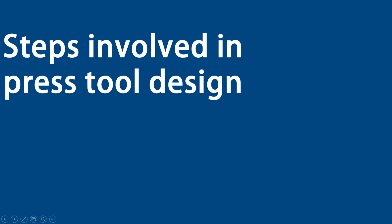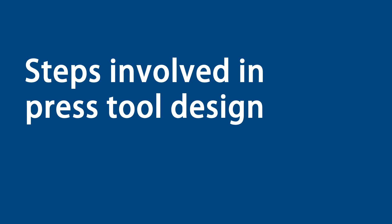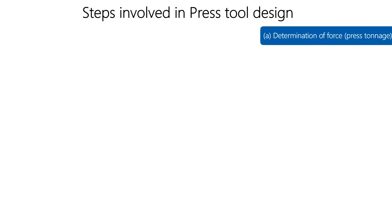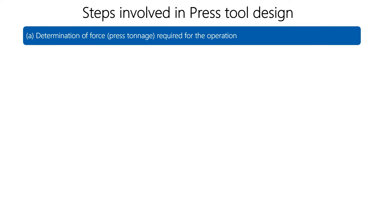Welcome back to Industrial Learning. Today we will talk about the steps involved in press tool design. We will see all the steps one by one, and in further sessions we will see complete descriptions with examples and calculations, and finally we will design using software. The first step in press tool design is determination of force, also called press tonnage — that is, how much force is required in press operations.